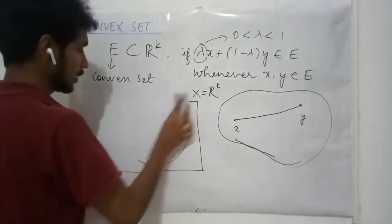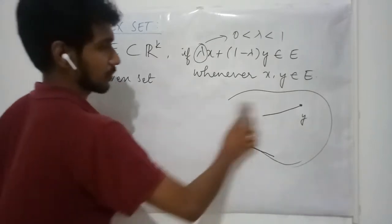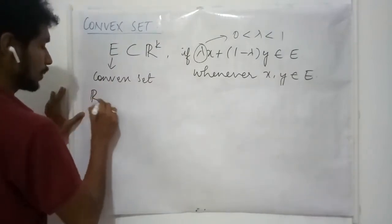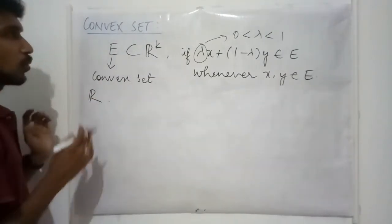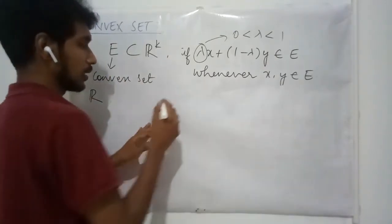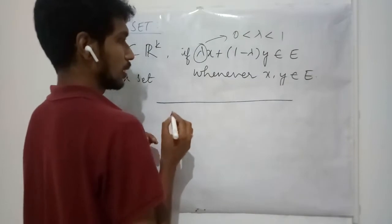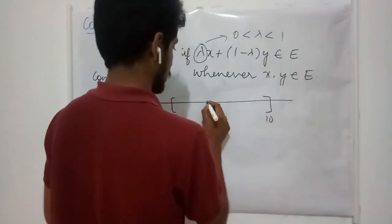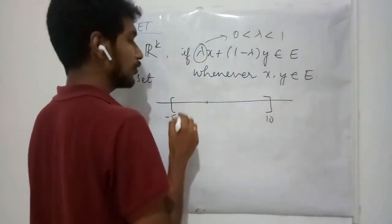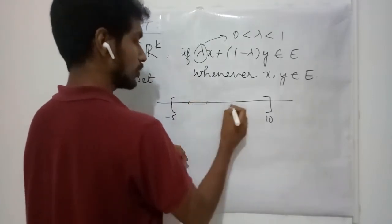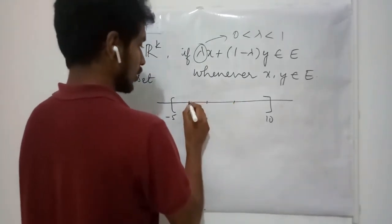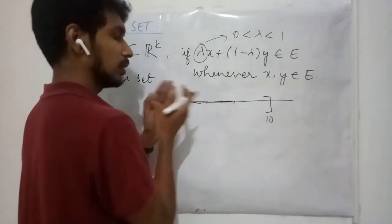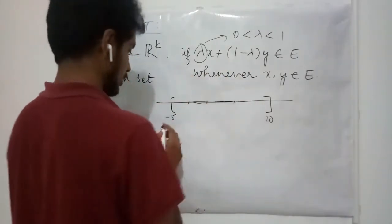Let us see a particular example on R1 and R2. What is happening in R — that is on the real line — what is called a convex set? Let me choose the interval minus 5 to 10 as my set E. If I take any two points on this line, the line joining these two points lies entirely on E. Therefore, this is a convex set.